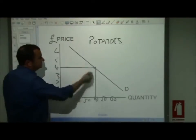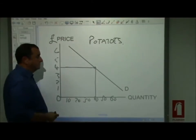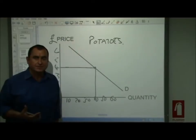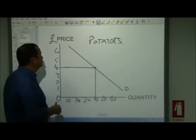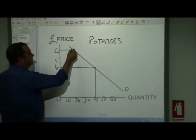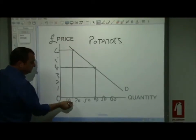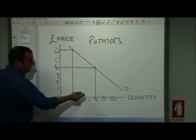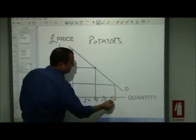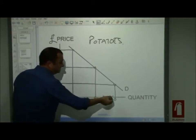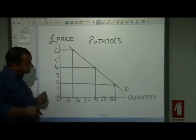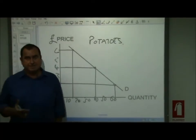The negative gradient of this demand curve is telling me there is an inverse relationship between price and quantity. When the price is higher — say six pounds — the quantity of potatoes being bought will be less. And if the price was lower — two pounds — this point on the demand curve tells me that more will be bought. The lower the price, the greater the quantity demanded.